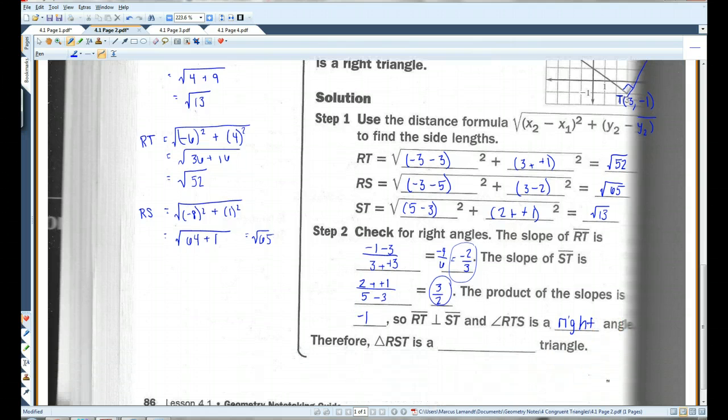So, because of that right angle and because all three sides are different lengths, triangle RST is a right scalene triangle.